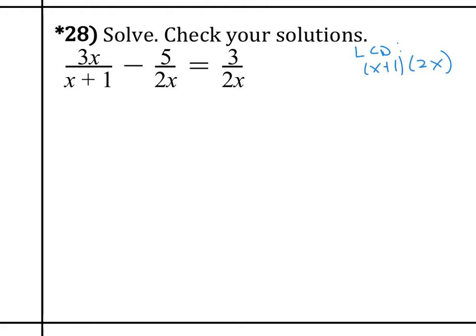So what we want to do, first of all, when we're solving, is we want to clear the fraction. So in order to clear the fraction, we're going to multiply each and every value by x plus 1 times 2x.